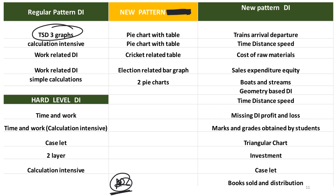So the first topic is Time Speed Distance. If you are a C2C Mentor student, you will actually be seeing this — we will be doing this in the workshop. These will be uploaded to your dashboard very soon, where you will be seeing Time Speed Distance, a three-graph level of questions. This is where you understand it has something to do with Time Speed Distance, Time and Work. This new pattern has a higher level of difficulty, and it is typically the favourite new-pattern DI — that is arithmetic.